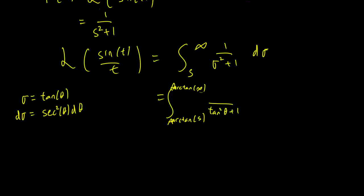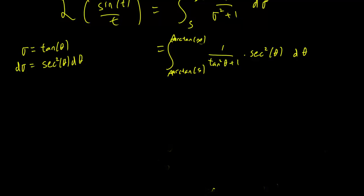And d sigma is going to be equal to secant squared theta d theta. So that's our trigonometric transform, and there's also a trig identity that says that tangent squared theta plus one is equal to secant squared theta, and so we can apply that trig identity too.